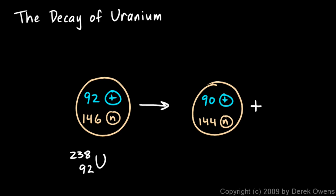Thorium-234. We write Th for thorium, and we'll put a 234 as the mass number and 90 as the atomic number. And where has the other stuff gone?